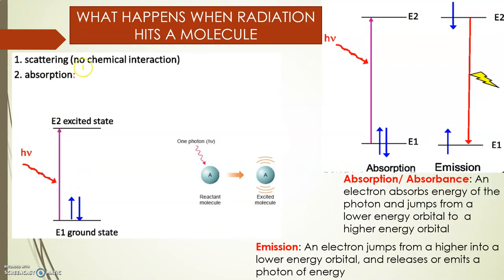What happens when radiation hits a molecule? It may lead to scattering or absorption. Absorption of light or photon, that is H nu, can lead the reactant molecule to go from a ground state to an excited state. The two associated processes can be absorption or emission.